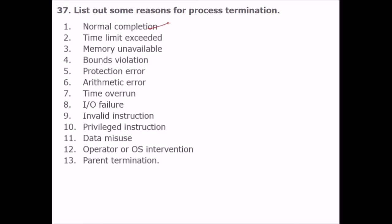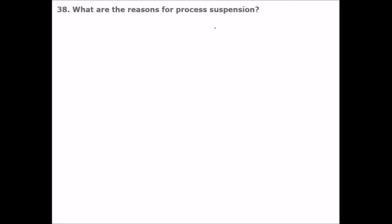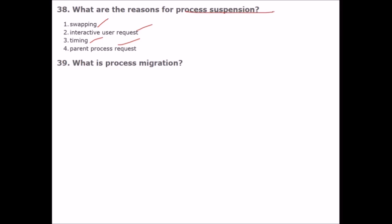List some reasons for process termination: normal completion, time limit exceeded, memory unavailable, bounds violation, protection error, arithmetic error, time overrun, I/O failure, invalid instruction, privileged instruction violation, data misuse, OS intervention, or parent process intervention. Reasons for process suspension include swapping, interactive user request, and parent process request.